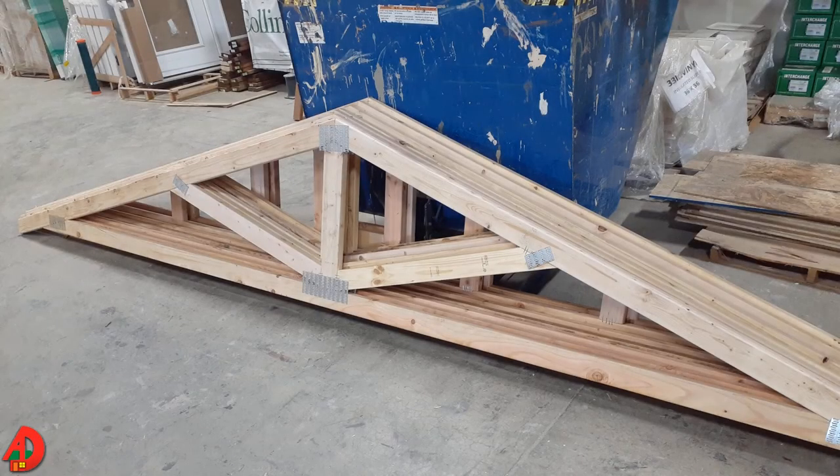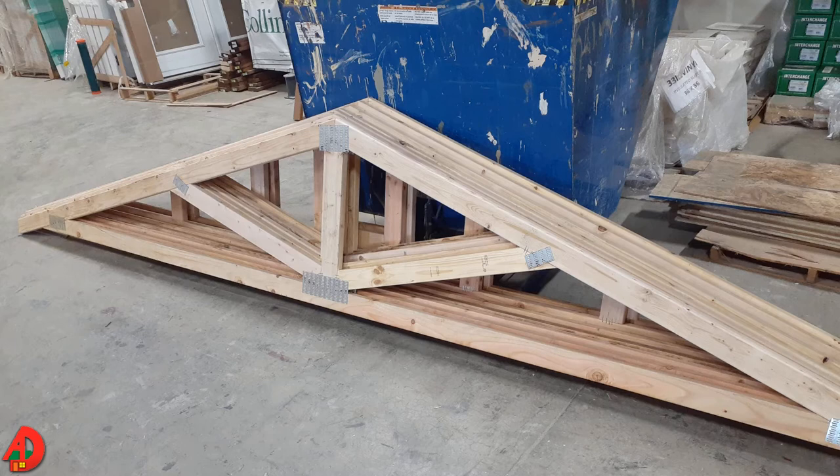A roof truss is an engineered combination of structural members arranged and fastened in triangular units to form a rigid framework for support of loads over a long span. Ends of the trusses bear directly on the opposing exterior walls.